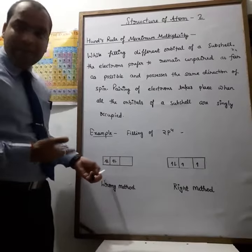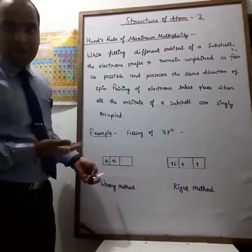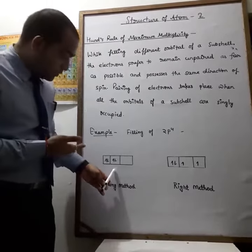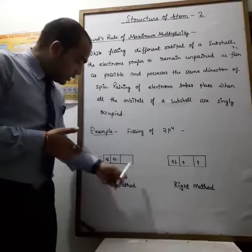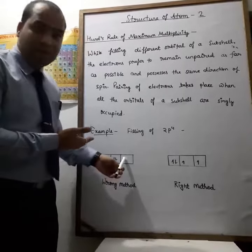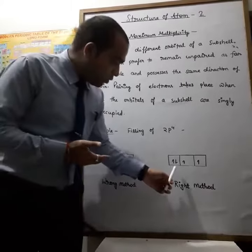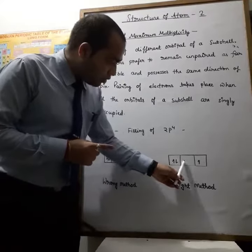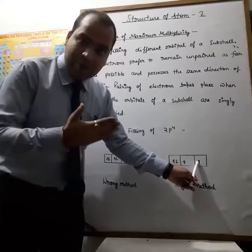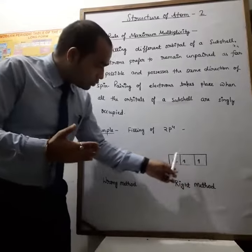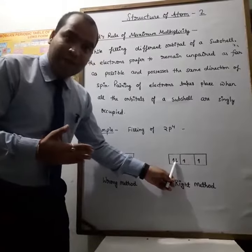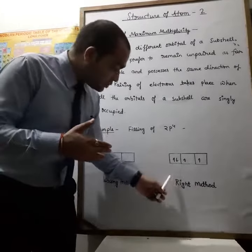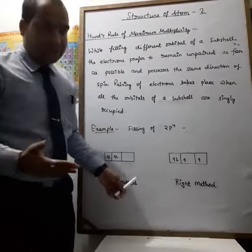One incorrect method would be to pair electrons immediately: the first orbital gets two electrons and the second gets two, but this is the wrong method — because this leaves one orbital vacant. The correct method is to fill one electron in each orbital first, clockwise, clockwise, clockwise — three electrons filled. Then the fourth electron is filled from the beginning again, pairing anti-clockwise. This is the right method. Thank you.